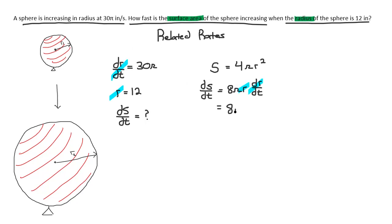We'll have 8π times 12 times 30π. This is a quantity that simplifies in its cleanest form to 2,880π², and the unit for this will be inches squared per second, since after all we're talking about a change in surface area per unit time.